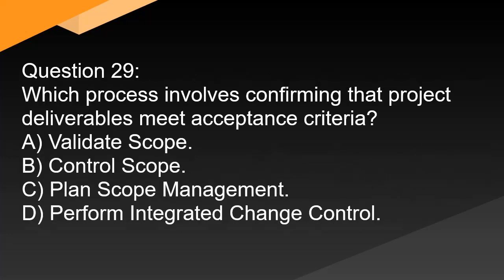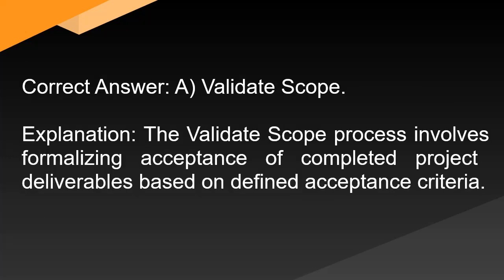Question 29: Which process involves confirming that project deliverables meet acceptance criteria? A. Validate scope. B. Control scope. C. Plan scope management. D. Perform integrated change control. Correct answer: A. Validate scope. Explanation: The validate scope process involves formalizing acceptance of completed project deliverables based on defined acceptance criteria.